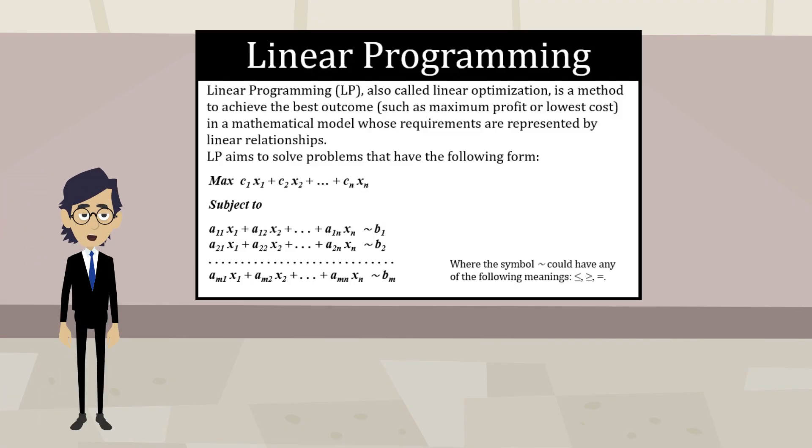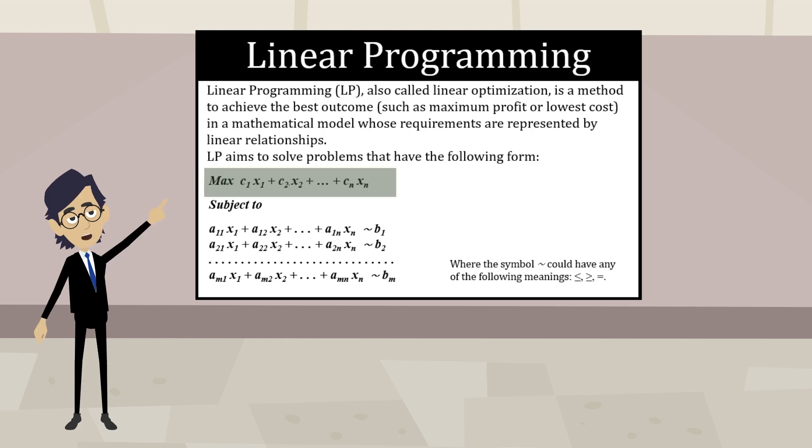Linear programming is a special case of mathematical optimization, and solve problems that have the following form. Linear programming is a technique for the optimization of a linear objective function, subject to linear equality and linear inequality constraints.